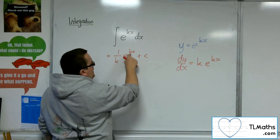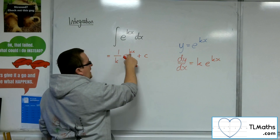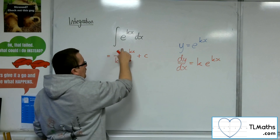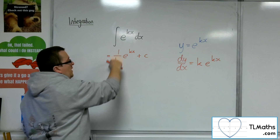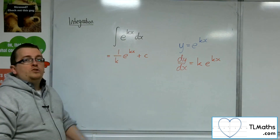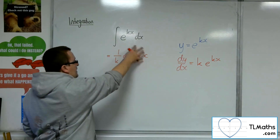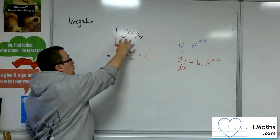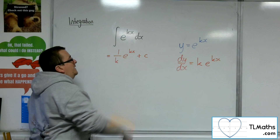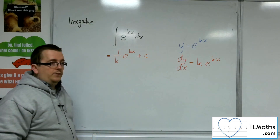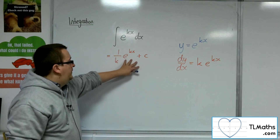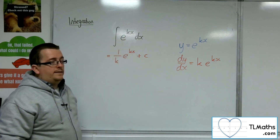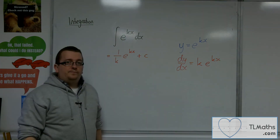Now the k, the coefficient of the x, will come down to the front and will multiply with the 1 over k, which makes 1. So if I differentiate that, I will return to e to the kx. So this is the integral of e to the kx.